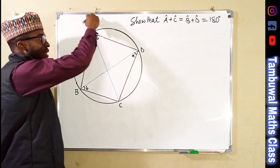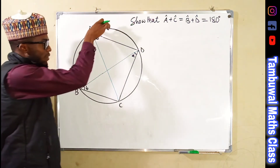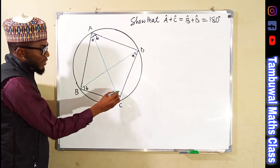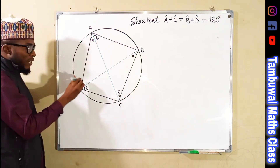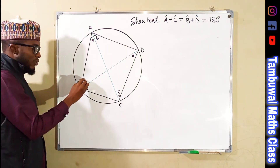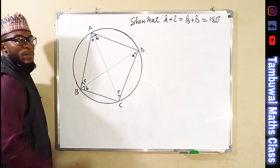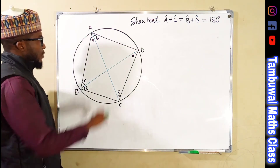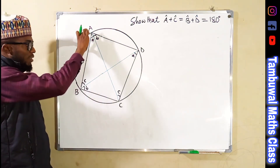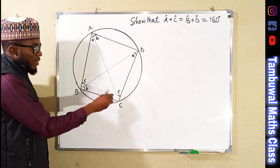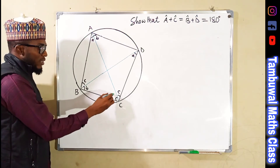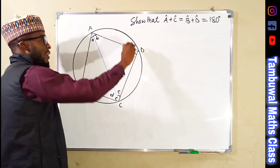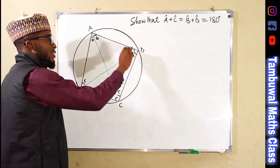This is arc AD. It forms an angle here, so we can call this C. It also forms another angle here, which is also C, because they are the same. Moving on to the last arc: it forms an angle here, which we can call D, and it forms another angle here, which is also D.